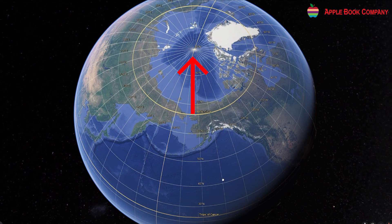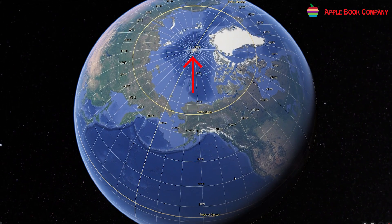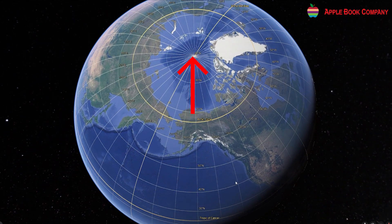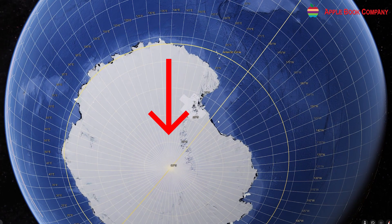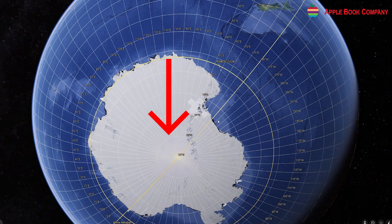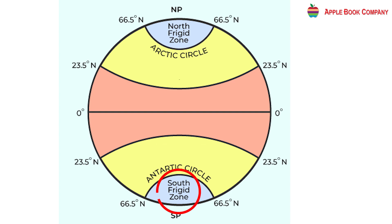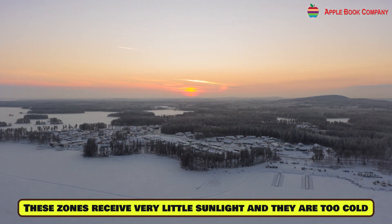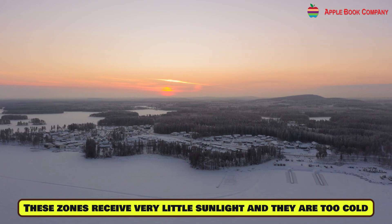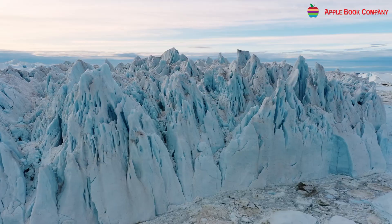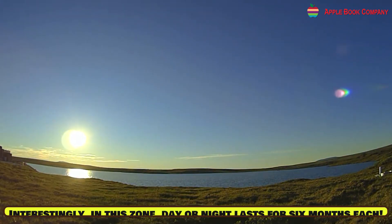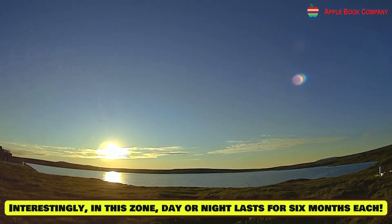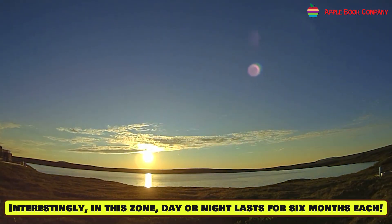The Frigid Zone is near the poles. It extends from the Arctic Circle to the North Pole, called the North Frigid Zone, and from the Antarctic Circle to the South Pole, called the South Frigid Zone. These zones receive very little sunlight and are too cold, covered with permanent ice. Interestingly, in this zone, day or night can last for six months each.